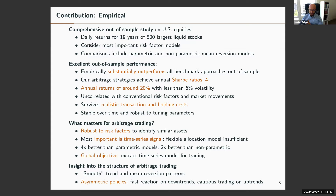What matters for arbitrage trading? The literature emphasizes finding methods to identify similar stocks, but we show that's really not the hard problem. Once you have a good factor model to identify similar assets, you get very similar results — whether you use a Fama-French model, principal component-based model, or conditional statistical factor model. Once you have sufficiently many factors extracted, those models perform very similarly.